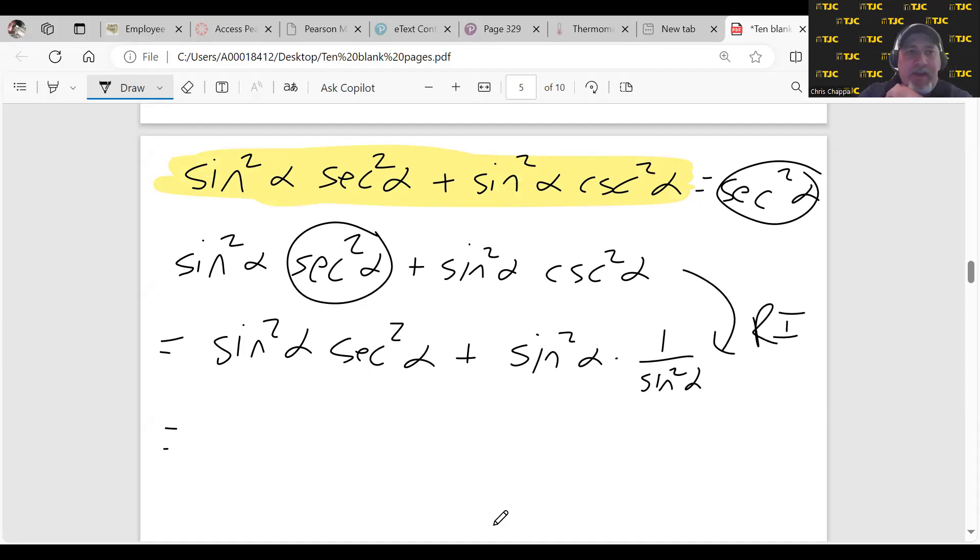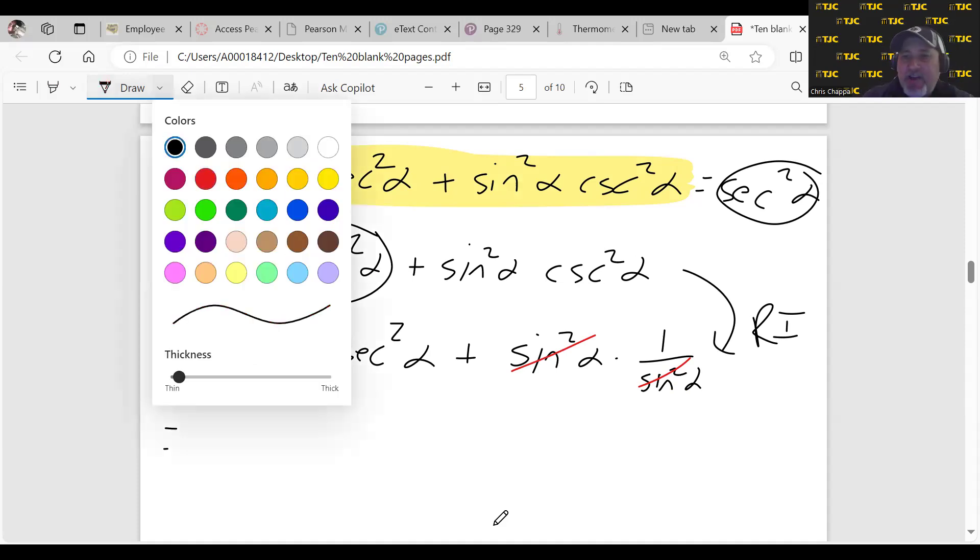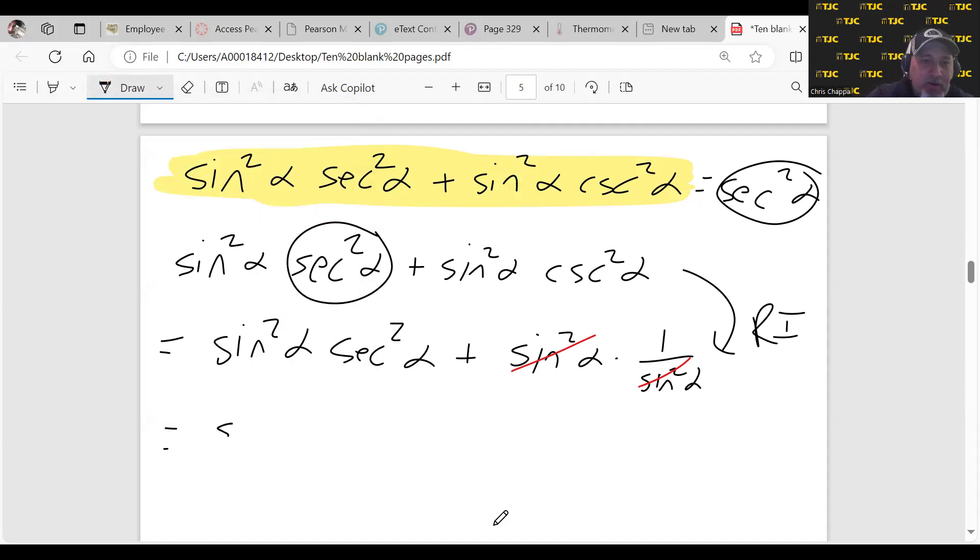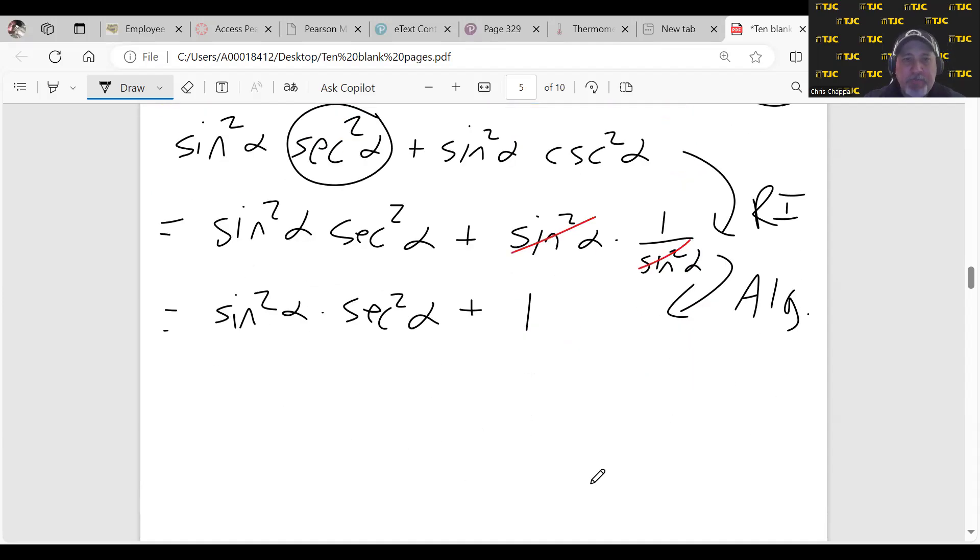And what happens as a consequence of that? As a consequence of that, the sine squareds cancel. And now we're left with... So I'm regretting my decision of not changing the secant squared. So let's go ahead and let's leave it alone just for a second. Actually, I'm okay with it. So from here to here was just algebra. We cancel the sine squareds.